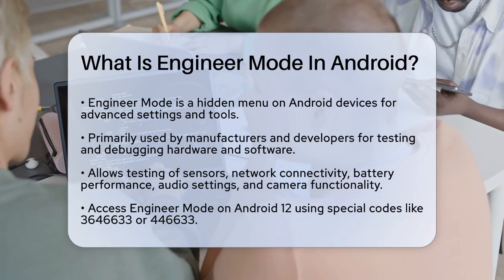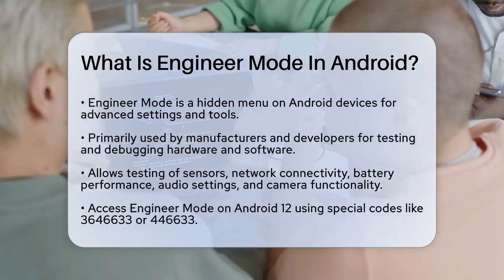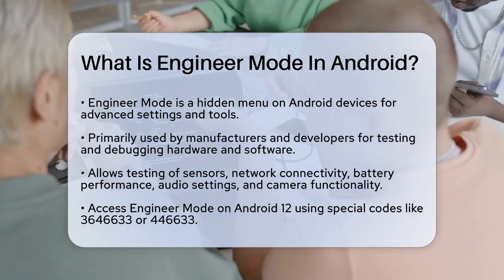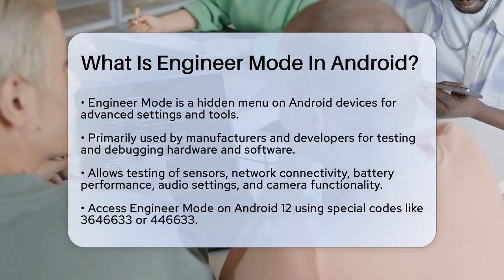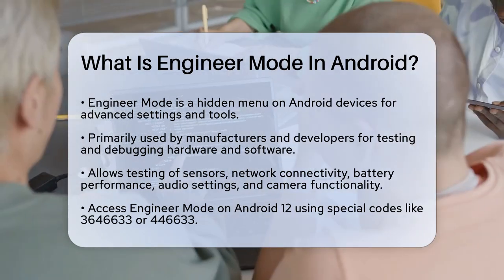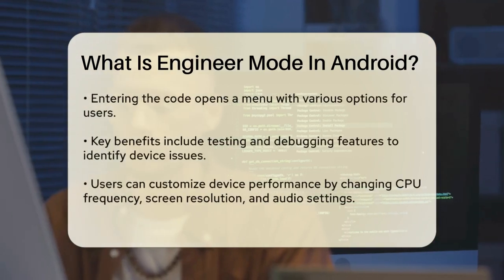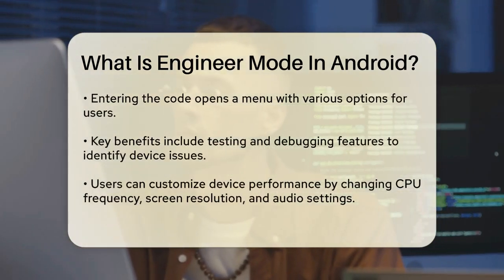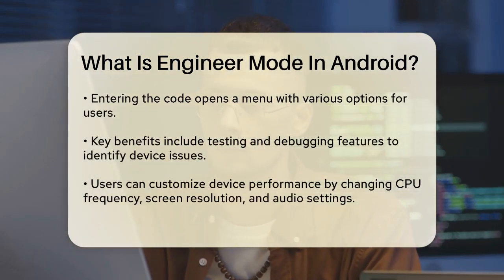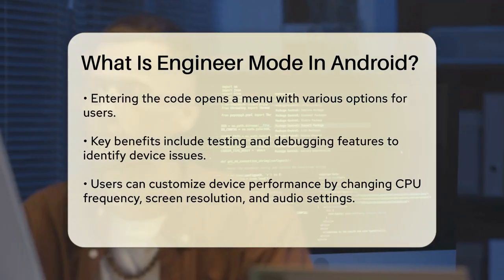This includes testing sensors, network connectivity, battery performance, audio settings, and even the camera. To access Engineer Mode on Android 12, you can use a special code through your phone's dialer app. The most common code varies depending on your device model. Once you enter the code, the Engineer Mode menu will appear, giving you access to a plethora of options.